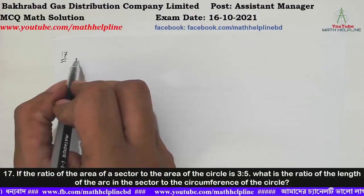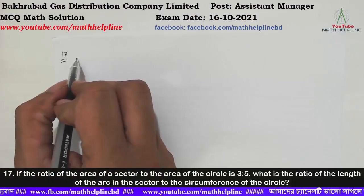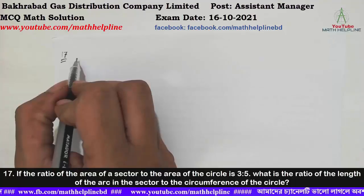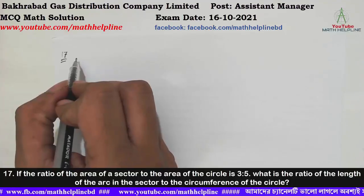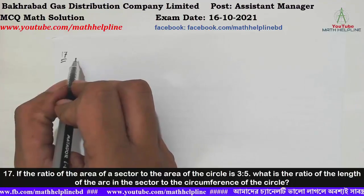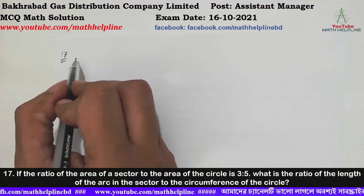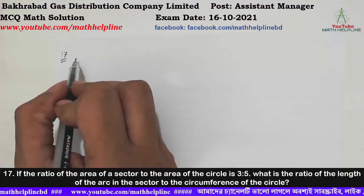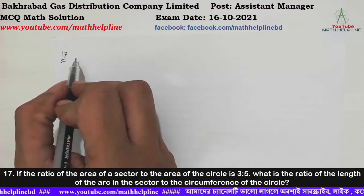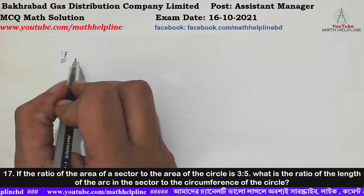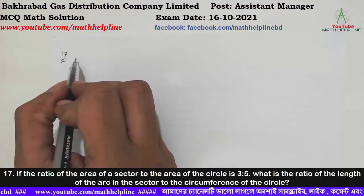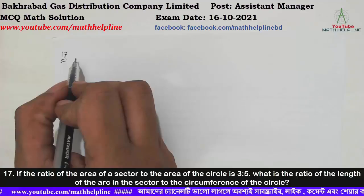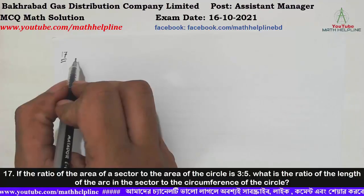If the ratio of the area of a sector to the area of the circle is 3 to 5, what is the ratio of the length of the arc in the sector to the circumference of the circle?